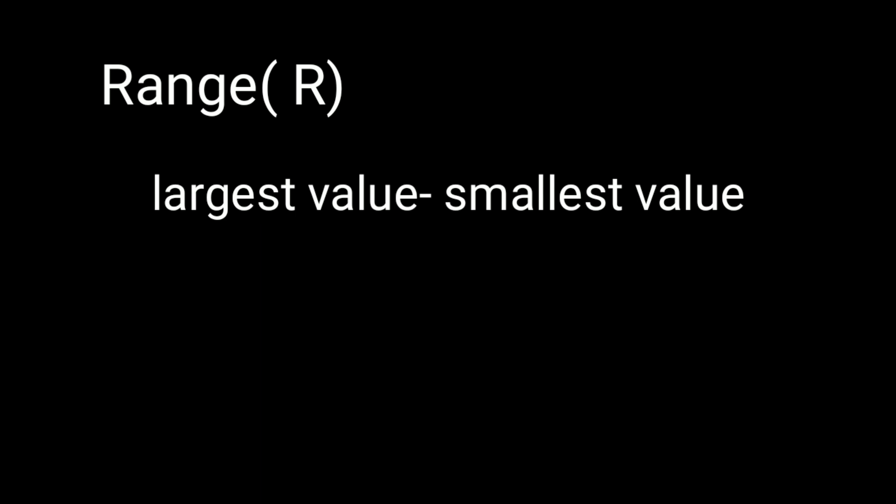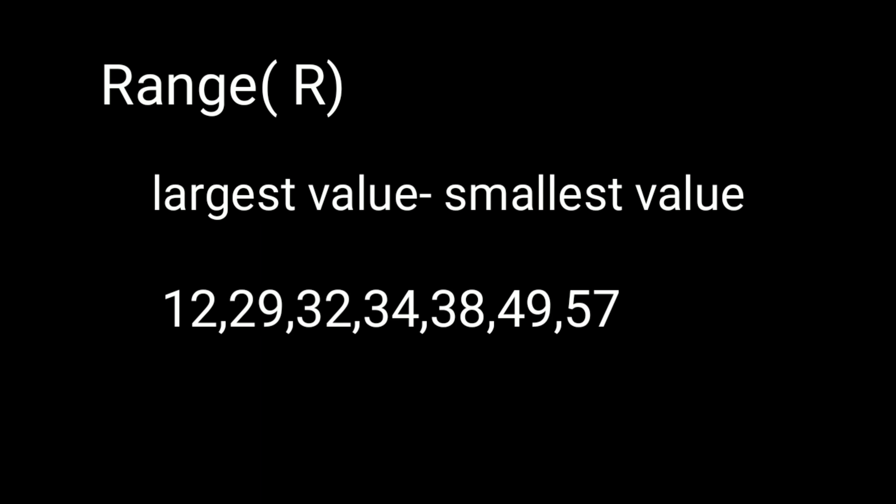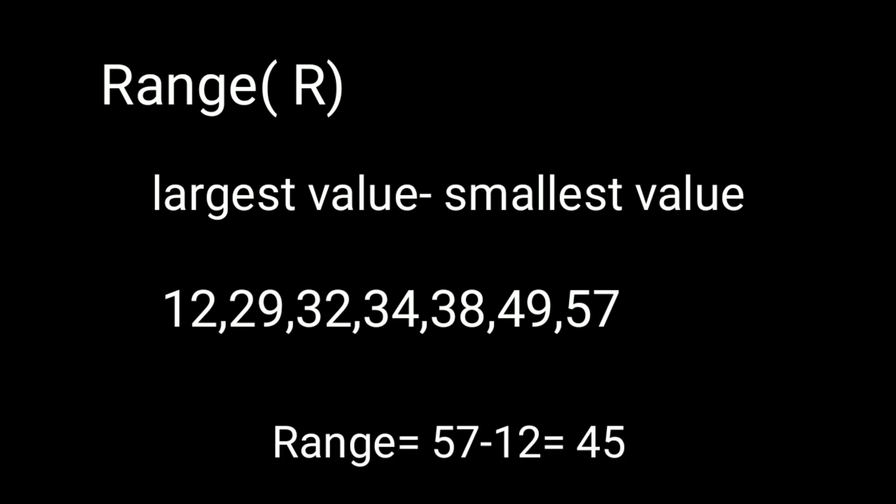Standard deviation is the most commonly used measure of dispersion. Range, denoted by R, is defined as the difference between the highest and lowest observed values: R = highest observation − lowest observation. For example, given the data set 12, 29, 32, 34, 38, 49, 57 — the highest value is 57 and the lowest is 12 — so the range is 57 − 12 = 45.